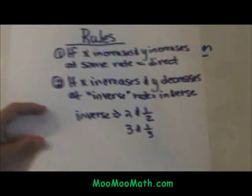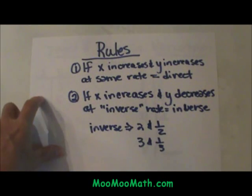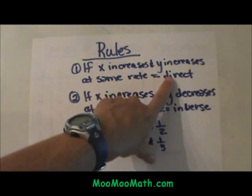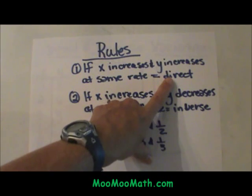Let's look at the rules and then we can decide if it is an inverse or a direct variation. If x increases and y increases, if they are both increasing at a constant rate, then it is a direct variation.